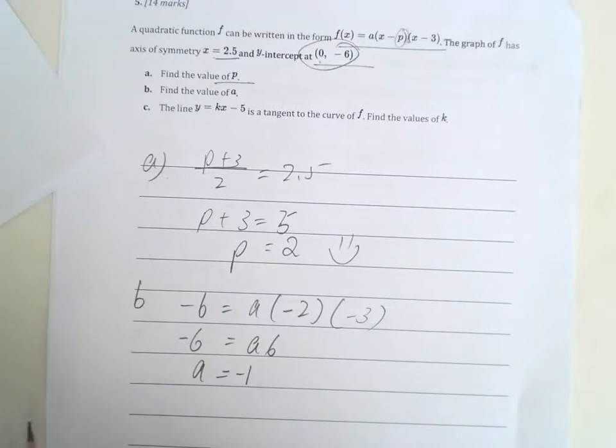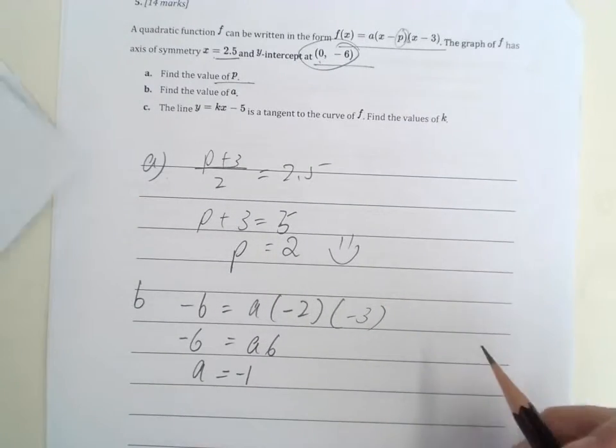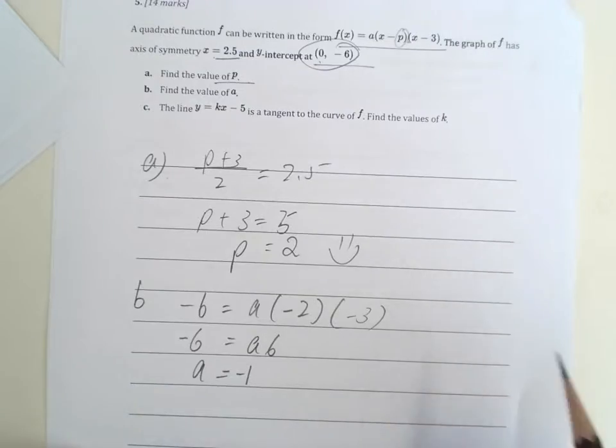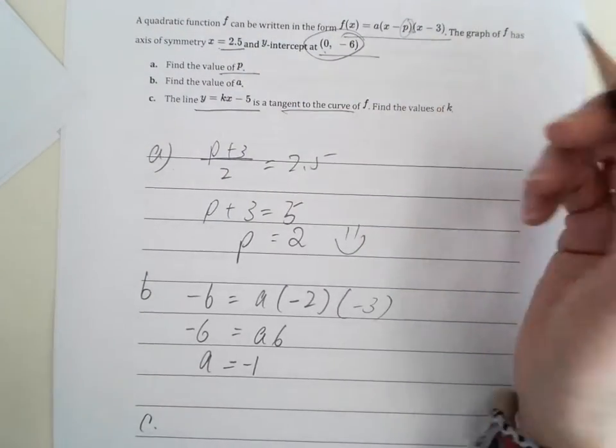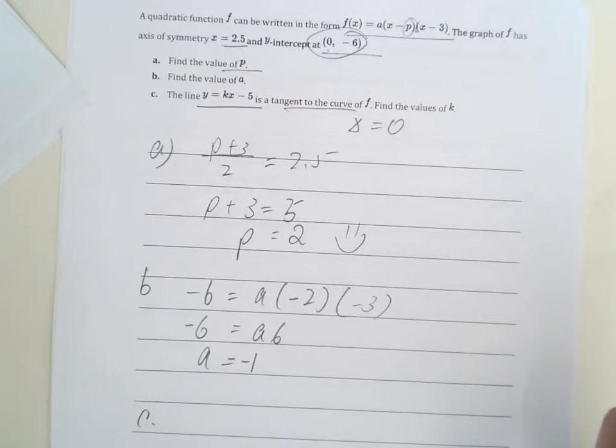Alright, now this is the hard bit which is the annoying bit here. So what we're going to do next will be, there is a line here. That's the tangent of it. Tangent means that discriminant equals to 0. We touch it once.